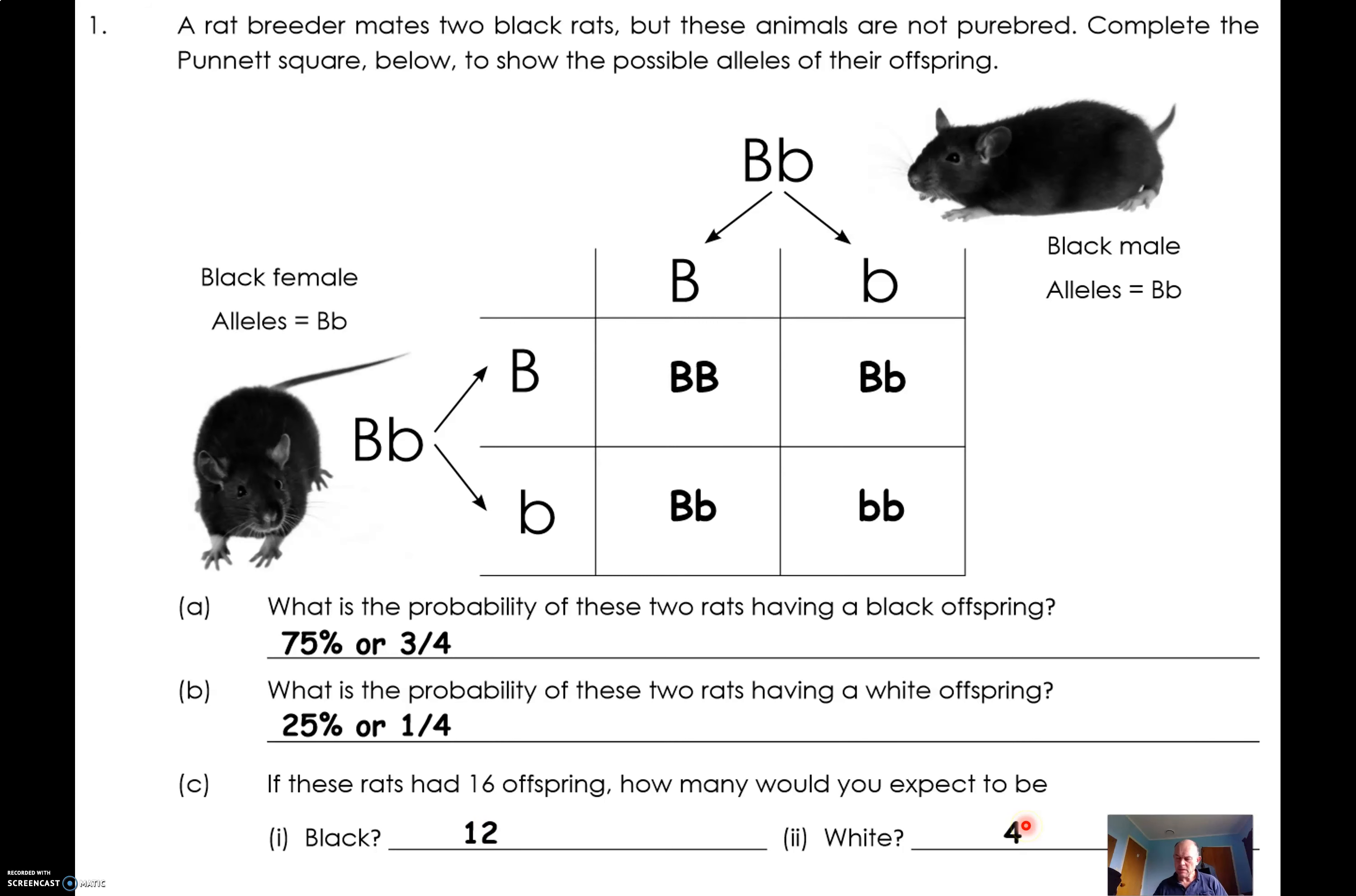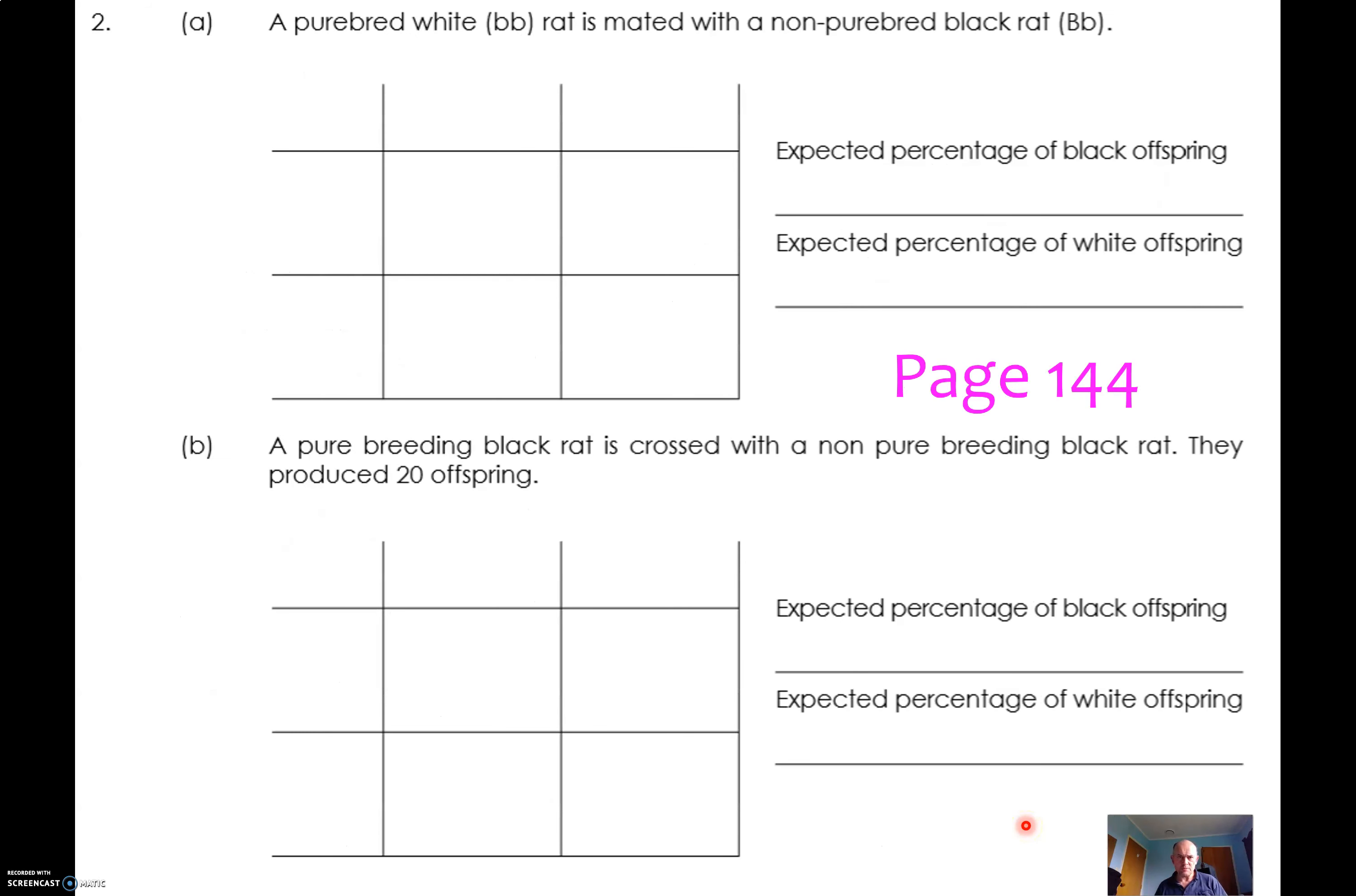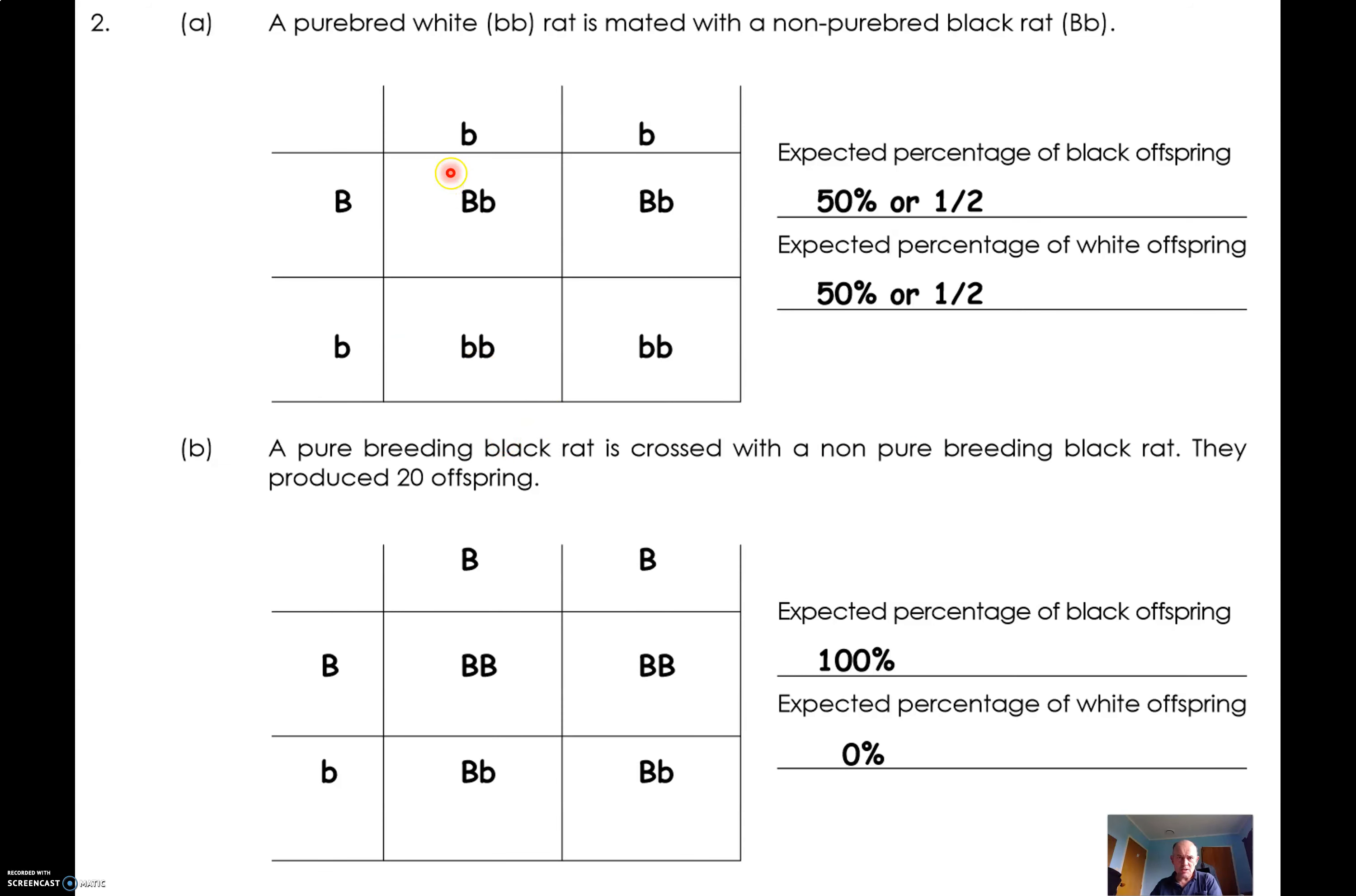That's useful. Cool. Moving along, we did this question here. A purebred white rat is mated with a non-purebred black rat, and then a pure breeding black rat is crossed with a non-pure breeding black rat. We're going to have here for these two: a purebred white rat will come through with the lowercase b. The non-purebred would have capital B for the dominant and then the recessive.